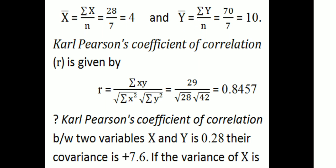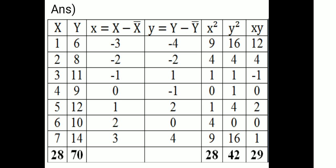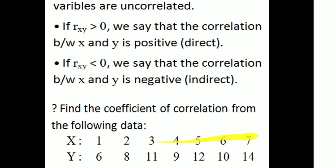Now we have summation x and summation y. We set up the table with all the data. Capital X and capital Y values are given. Small x equals capital X minus x-bar, and small y equals capital Y minus y-bar. Then we compute small x-squared, small y-squared, and small xy. Capital X takes values 1, 2, 3, up to 7.